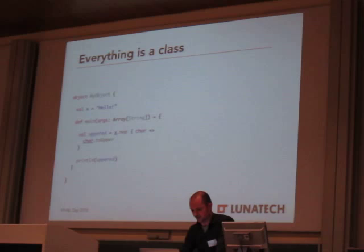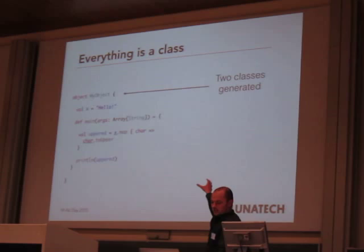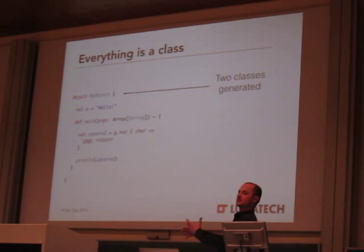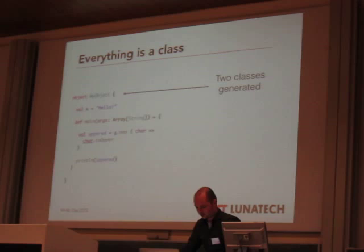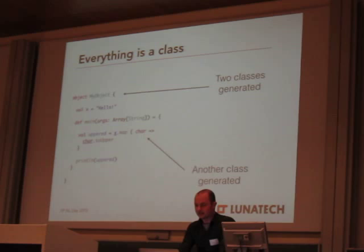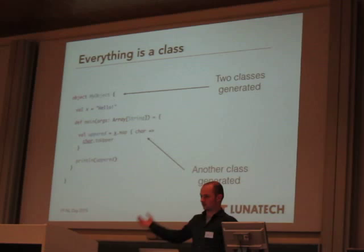Mostly everything is an expression in Scala, and everything becomes a class on the JVM. This code actually creates two classes: the myObject class, which has some static forwarders, and the myObject$ class that is actually instantiated. There is code in the static initializer that creates one synchronized instance of myObject. The lambda function in the middle also creates a class, because on the JVM there are no first-class functions - they have to be wrapped in an object.